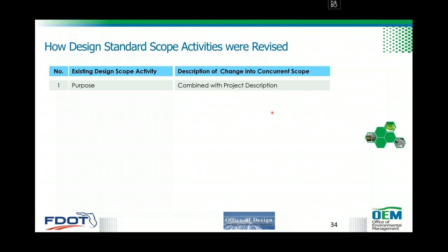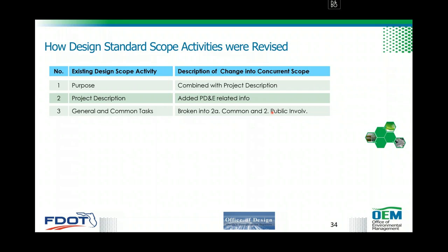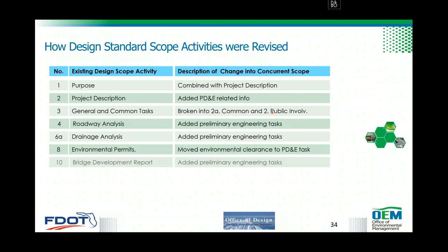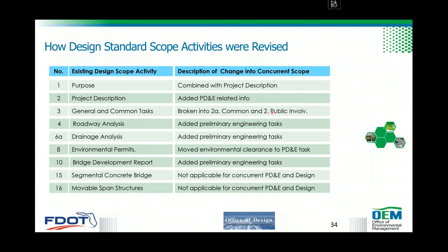This slide shows how PD&E activities were revised. On the left is the existing standalone PD&E scope of services; on the right is how those activities are scoped under the concurrent PD&E and design phase. Sections 1 and 2 of PD&E (scope of services and purpose/project description) were merged into one 'Purpose and Project Description.' Public involvement was merged into the new public involvement section (2B). Engineering analysis moved into: 3A (preliminary engineering analysis), Section 4 (roadway analysis), 6A (drainage), Section 7 (utilities and railroads), and Section 10 (bridge development report). Environmental analysis and report became 3B; the environmental document became 3C. Noise analysis was merged into Section 32.